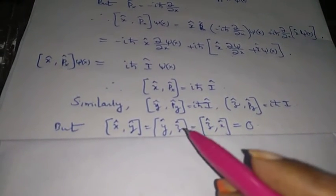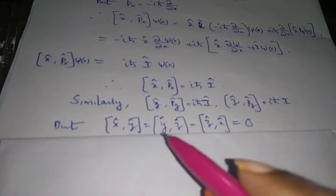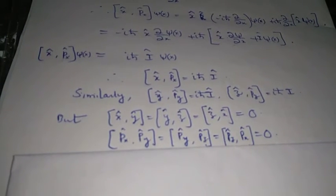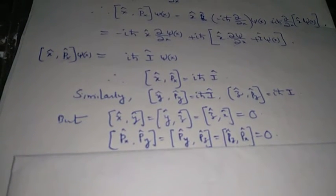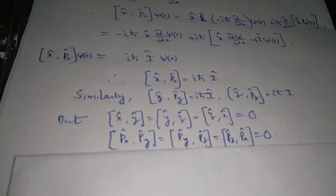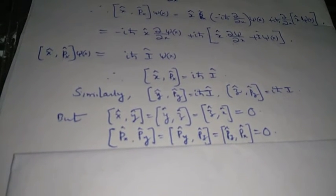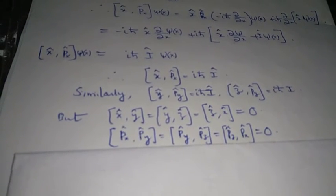If you take any combination of the position operators x hat, y hat, and z hat, their commutators will all equal zero. Similarly, for the momentum operators p_x hat, p_y hat, and p_z hat, the commutators are also zero. All these commutator relationships are called the basic commutation relationships.